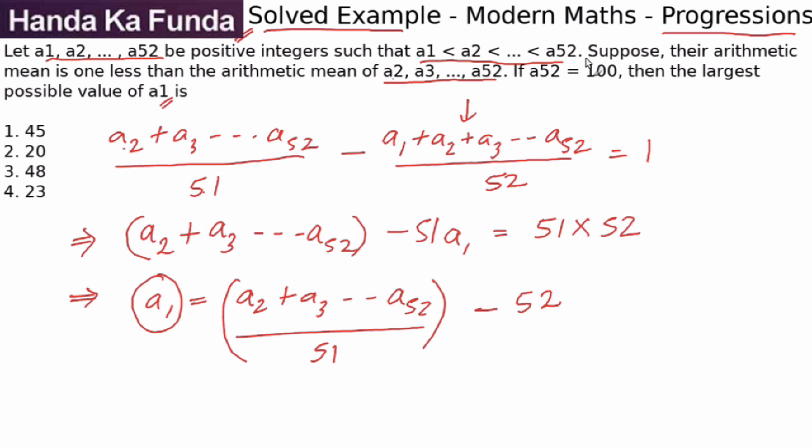We are given that a52 is 100. We are also given that they are positive integers and we need to take their maximum values. So we will consider 52 as 100, then the previous value, the maximum possible is 99, the previous value, maximum possible is 98. And what will be the first term? Well, 52 has become 100, 51 has become 99, so they are getting 48 more than the value here. So a2 will be 50 plus 51 till 98. This is going to be my answer.